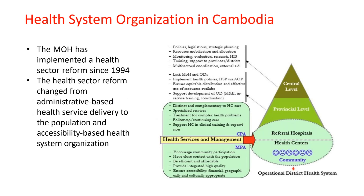For the health system in Cambodia, we had reforms in the Ministry of Health in 1994, changing from administrative-based health service delivery to population-based accessibility, based on health system organization. The health facility coverage is determined by the total population per administrative district. One health center covers about 100,000 population, and one operational district may cover one or two administrative districts.